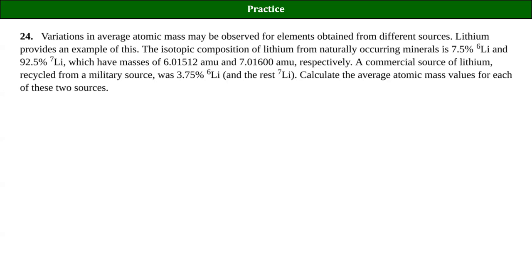That symbol is called a capital sigma, which looks kind of like a sideways M. It just means you're going to add up a bunch of pieces. We use that when we're going to be adding a bunch of things and there's an indefinite number of them. In this case there are only two isotopes, so we ended up with two terms. If there were three different isotopes, we'd have three terms.